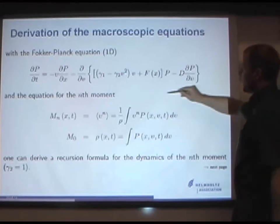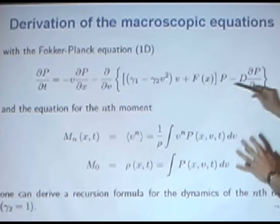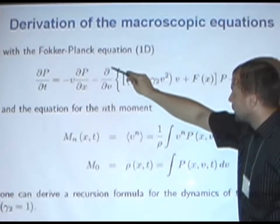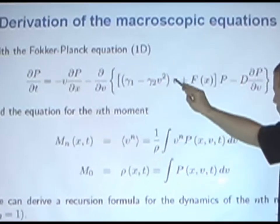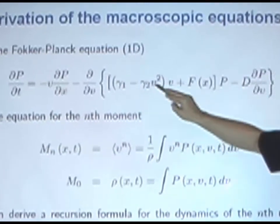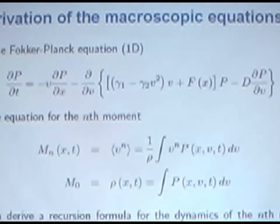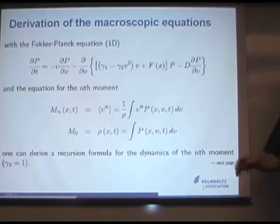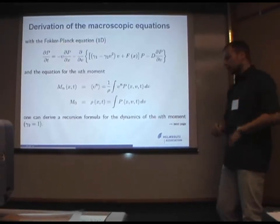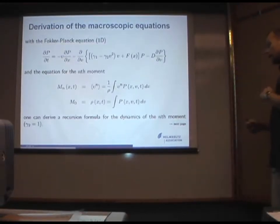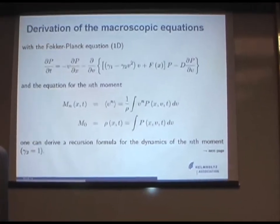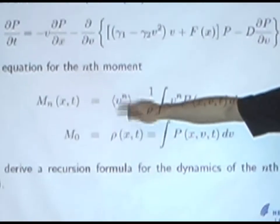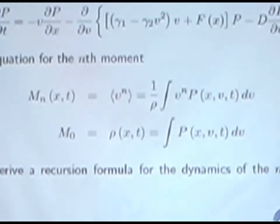So you might remember the Fokker-Planck equation. We have a drift term of the velocity probability along the velocity line which depends on the friction function and of the action forces. And we have a fusion term along the velocity axis. So the variation of the velocity changes because of the fusion, because of the noise. Now let us write down the equations of the moments of this equation. If we take v to the power of n and integrate this over the velocity, then we have the nth moment.